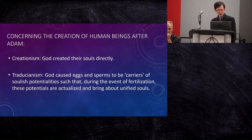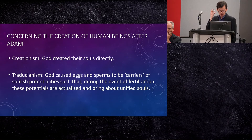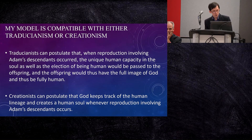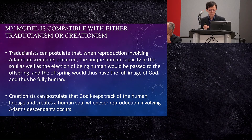Concerning the creation of human beings after Adam, in the history of Christian thought there are various views such as creationism — that God created the souls directly — and traditionalism, which says that God created the gametes to be the carriers of souls' potentialities such that these potentialities are passed down to the descendants. My model is compatible with either traditionalism or creationism. On traditionalism, one can argue that when reproduction involving Adam's descendants occurs, the unique human capacity in the soul, as well as the election and the function, will be passed to the offspring. Creationists can postulate that God keeps track of the human lineage and creates a human soul whenever reproduction involving Adam's descendants occurs.